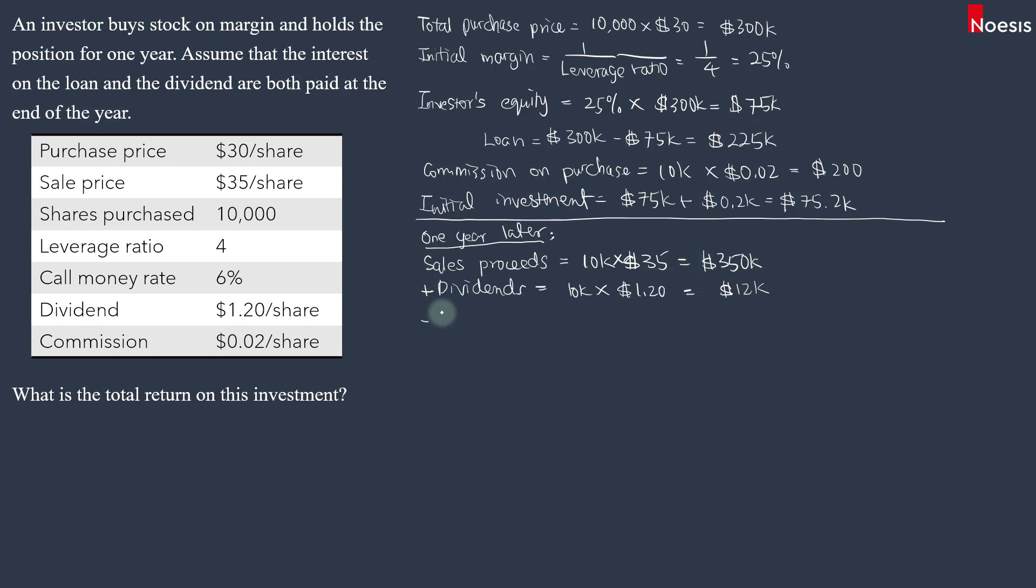And then we'll minus the loan. So the loan will be $225,000. So we'll minus that off. And then we'll minus the interest. Interest is 6% times $225,000. So that will be $13,500.